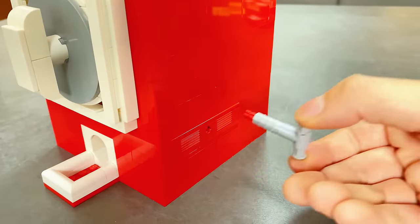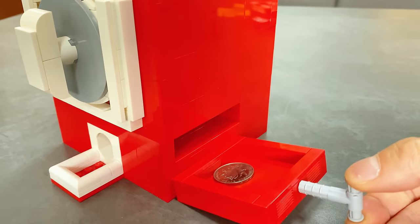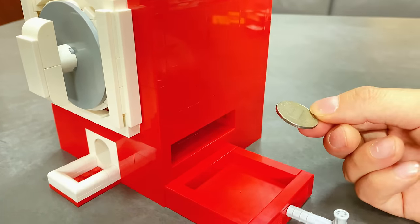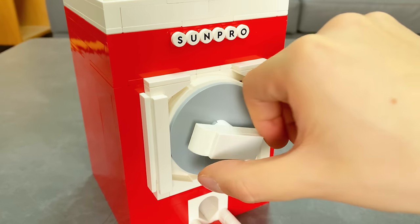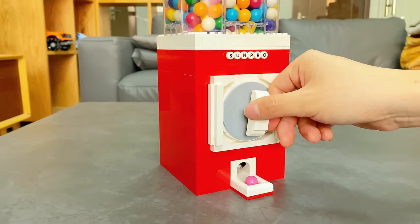So simply use Legos to make a key, and pull out the box. You will find a hidden coin inside of it. Put in the coin and turn the handle. Then you get a delicious gumball.